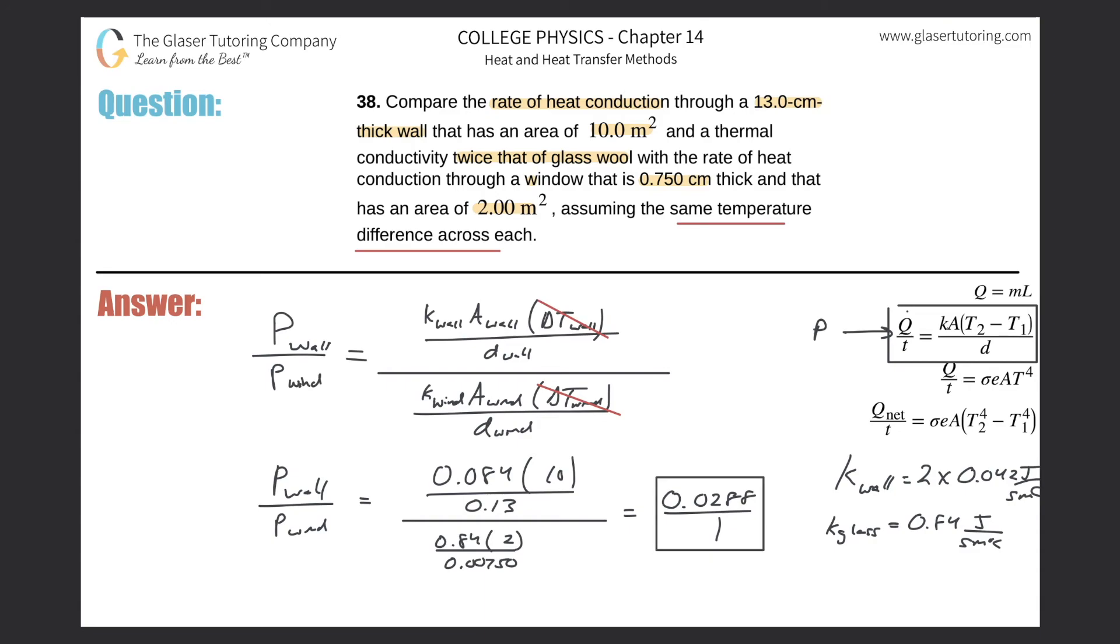So which one conducts more heat per second? Well, the window does, and that should make sense. When you go, if it's cold outside or warm outside and you go feel the window, it feels warmer. Now, not necessarily does that mean that it actually is warmer, because we discussed in prior problems that your sensory apparatus is set up to detect rates of heat transfer.